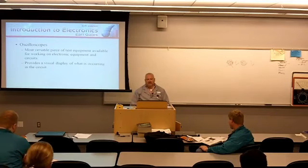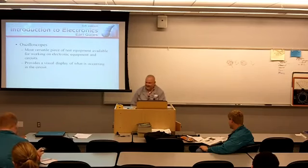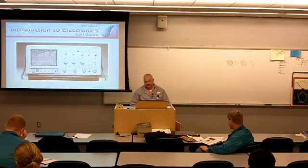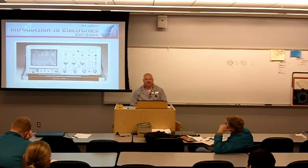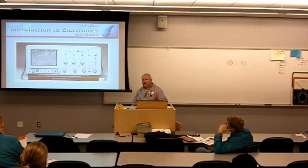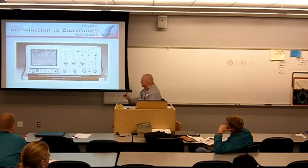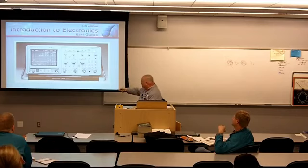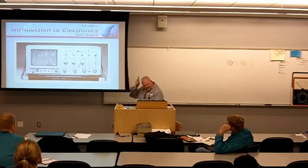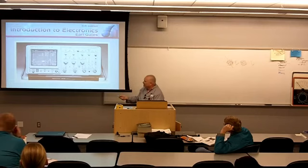The nice thing about an oscilloscope is it provides a visual display of what's occurring in the circuit. This is a Tektronix 2440, which is a digital storage scope — a combination of analog and digital. It'll actually provide some digital readouts on the face of the oscilloscope, while also giving us an analog representation of the signal we're evaluating. It's a marriage between both.